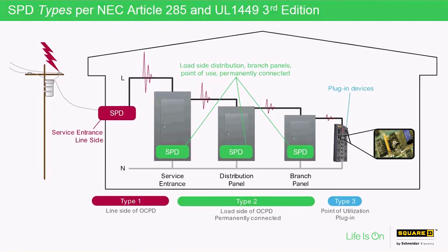Moving on to Type 3, these SPDs are commonly referred to as point-of-utilization SPDs, which are to be installed at a minimum conductor length of 10 meters or 30 feet from the electrical service panel, unless they are evaluated at Type 2 — that is, they receive a nominal discharge rating of 3kA minimum. Typically, these are cord-connected surge strips, direct plug-in SPDs, or receptacle-type SPDs installed at the point of utilization being protected — for example, computers, copy machines, etc. APC by Schneider Electric has a full and comprehensive line of plug-in surge strips.